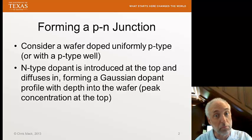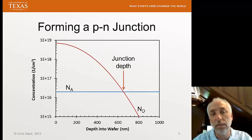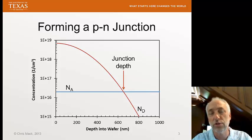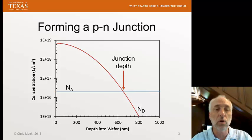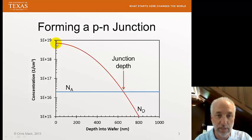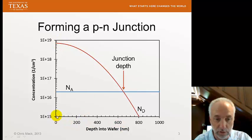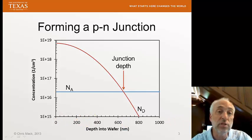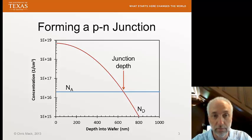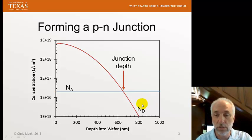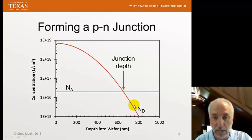We typically plot concentrations on logarithmic scales, because the concentration can vary by orders of magnitude. At the top of the wafer we see the peak concentration, and then it falls off with depth — 200, 400, 600 nanometers into the wafer. A Gaussian function plotted on a logarithmic scale looks like a parabola, which is why the red curve showing the donor concentration has a parabolic shape.